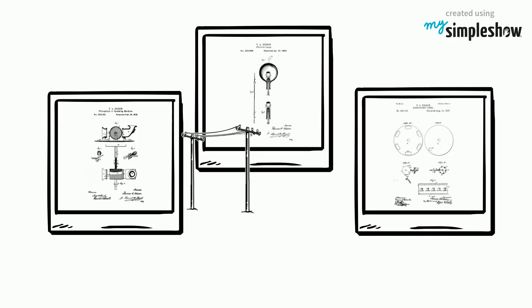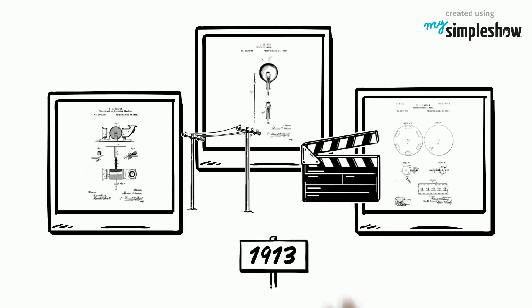He also invented the kinetographic camera, which could do to the eye what the phonograph does for the ear in 1896. In 1913 he combined the two, producing the first talking motion picture.